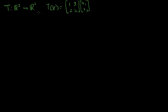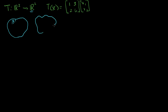Now let's say I have some subset in my codomain. So my domain looks like that — it's R2. My function or transformation maps elements of R2 into elements of its codomain, which also happens to be R2. Let's draw my codomain here. Our transformation maps any element here to an association or a mapping into R2.